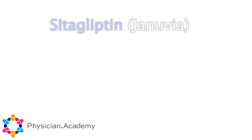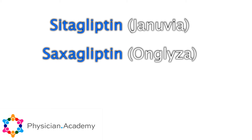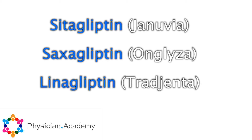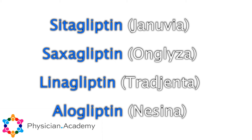What are the common drugs that are out there? There's sitagliptin, also known as Januvia, which is one I use a lot; saxagliptin, also known as Onglyza; linagliptin, known as Tradjenta; and alogliptin, known as Nesina.